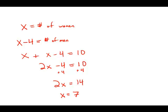And this makes sense because if there are seven women, there would be three men. That would mean that there would be four more women than men. This is answer choice D.